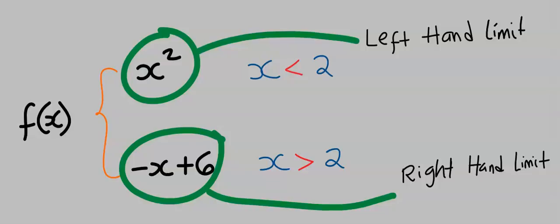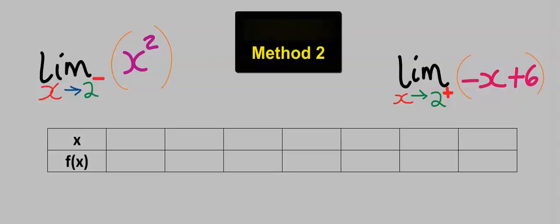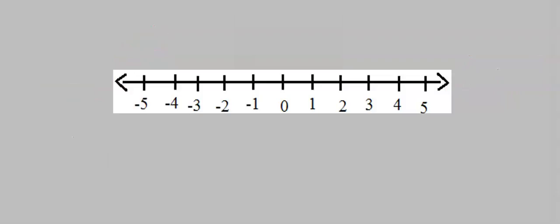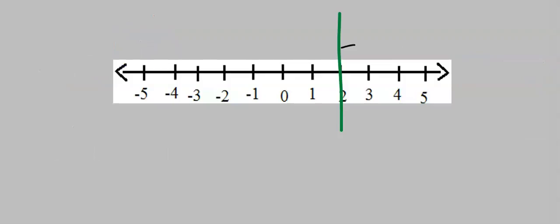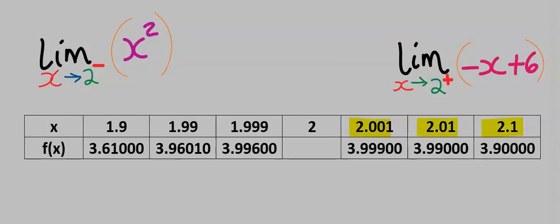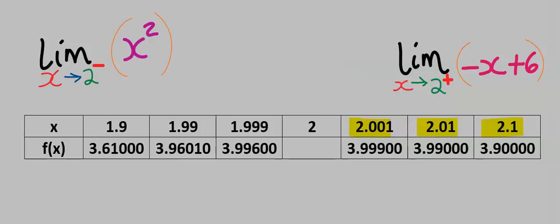The left-hand limit and the right-hand limit are equal, hence we say that this limit exists. Subsequently, if you decide to draw up a table to determine this limit numerically, the first step is: on the number line, locate 2. Next, locate the middle of the table and write 2. Next, go a bit off from 2 towards the right and you will generate these values. Next, go a bit off from 2 towards the left and you will generate these values.